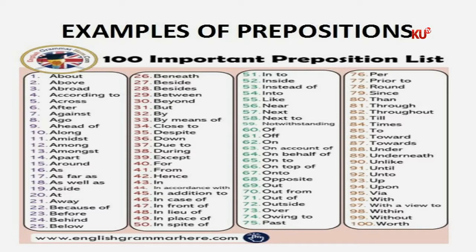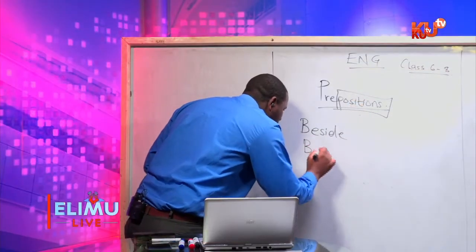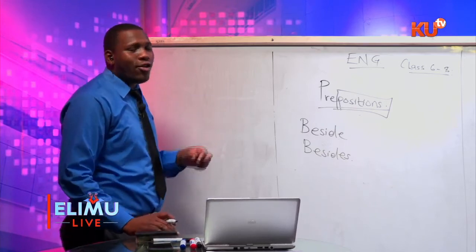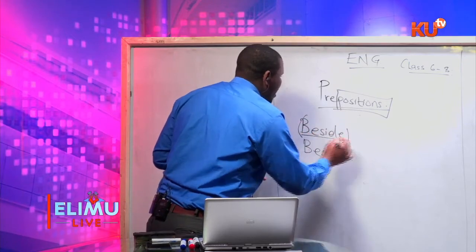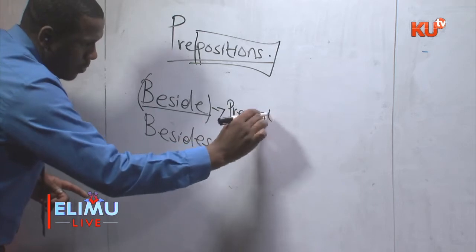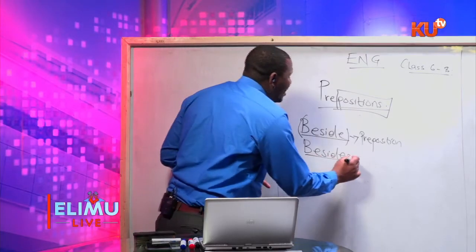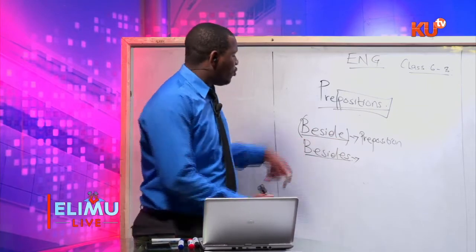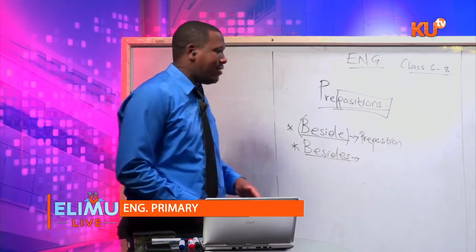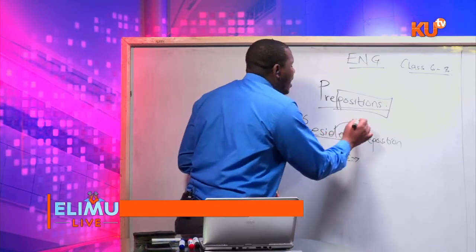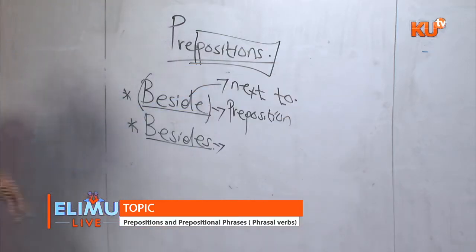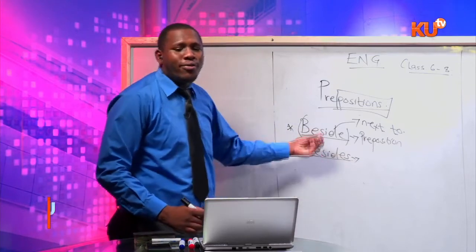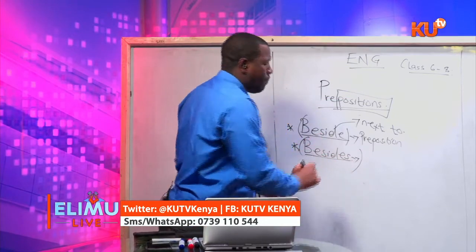We have besides and beside. One is a preposition and the other is a conjunction of additional information. Besides — with an S — is a preposition meaning next to. Besides — as a conjunction — gives additional information, like furthermore, in addition to, and moreover. Learners should get the difference between the two; they are highly tested.